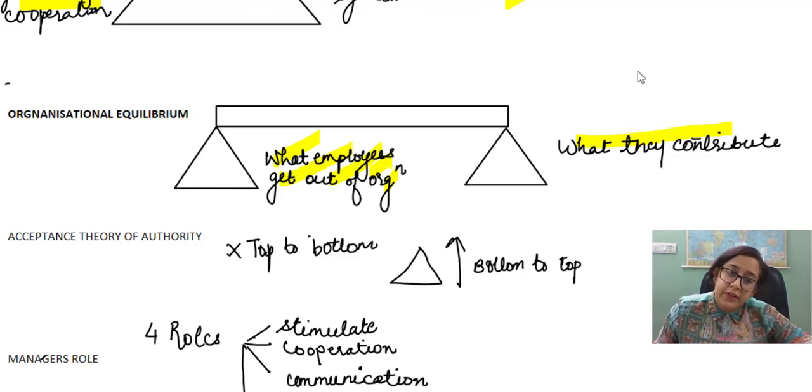The next theory that he talks about is the acceptance theory of authority. Contrary to the popular belief that authority flows from top to bottom, it is not so. Authority is considered to be existent only when it is accepted by the subordinate. Therefore, we can say that the authority flows from bottom to top.